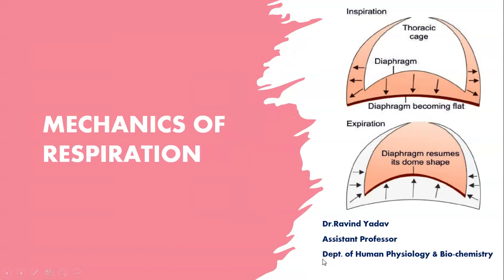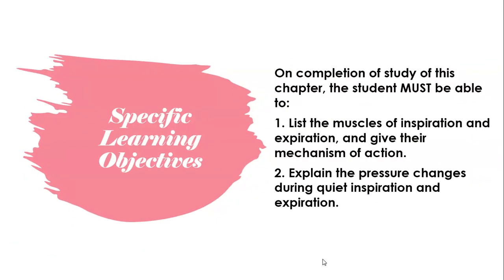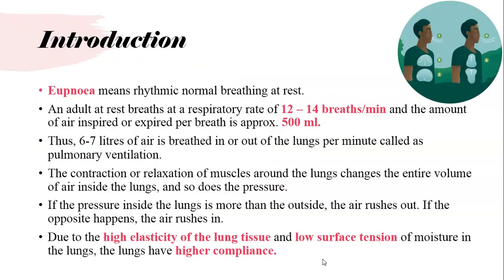This is the second video on the chapter of respiratory system. In this chapter, you should be able to describe or list the muscles of inspiration and expiration and give their mechanics of action — that is how do they work — and explain the pressure changes during quiet inspiration and expiration.